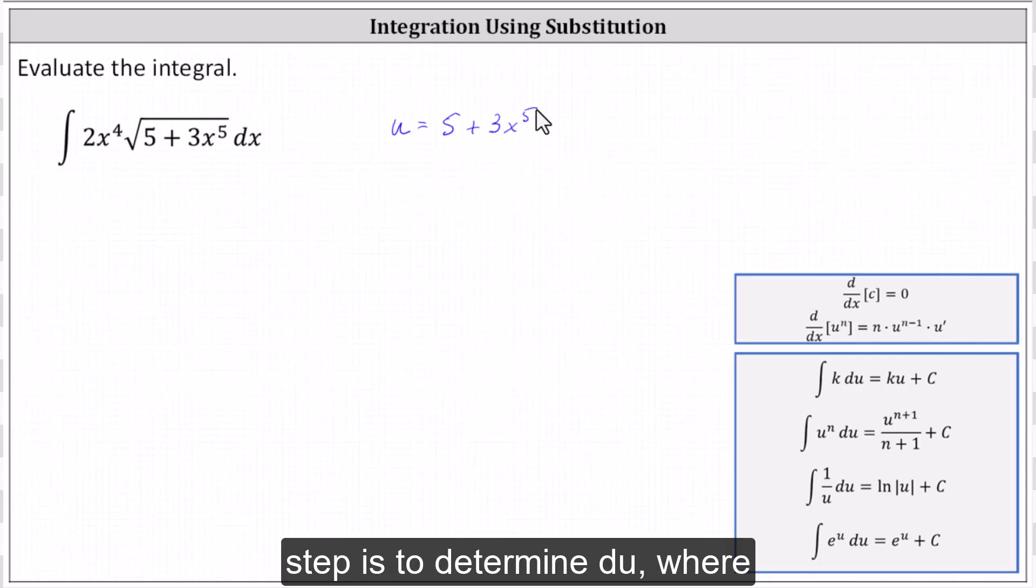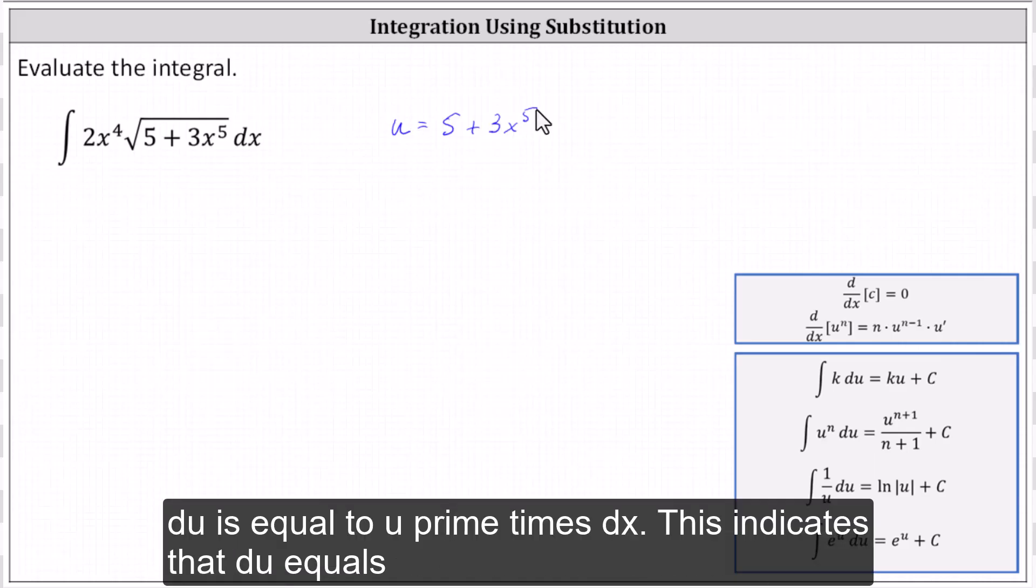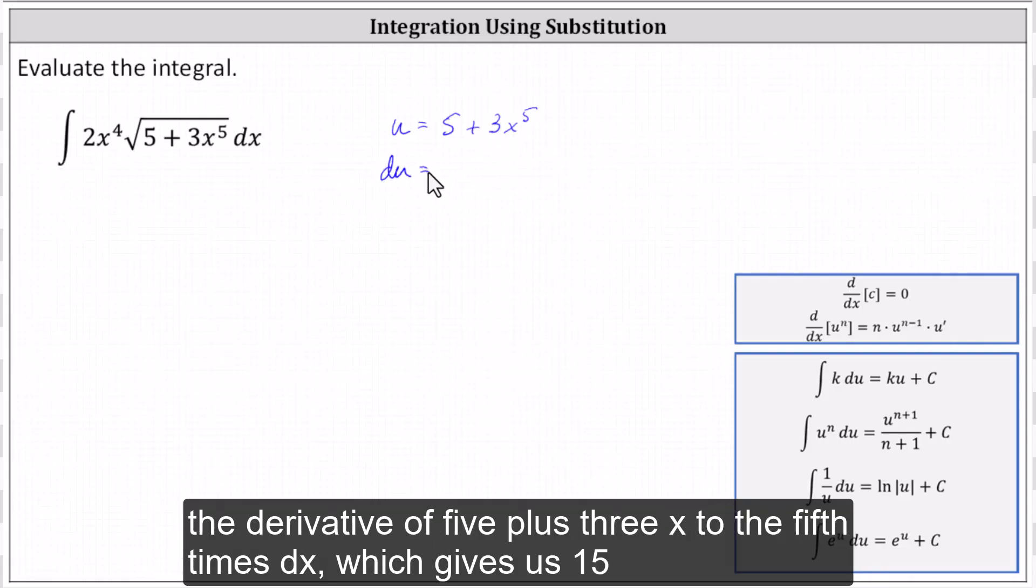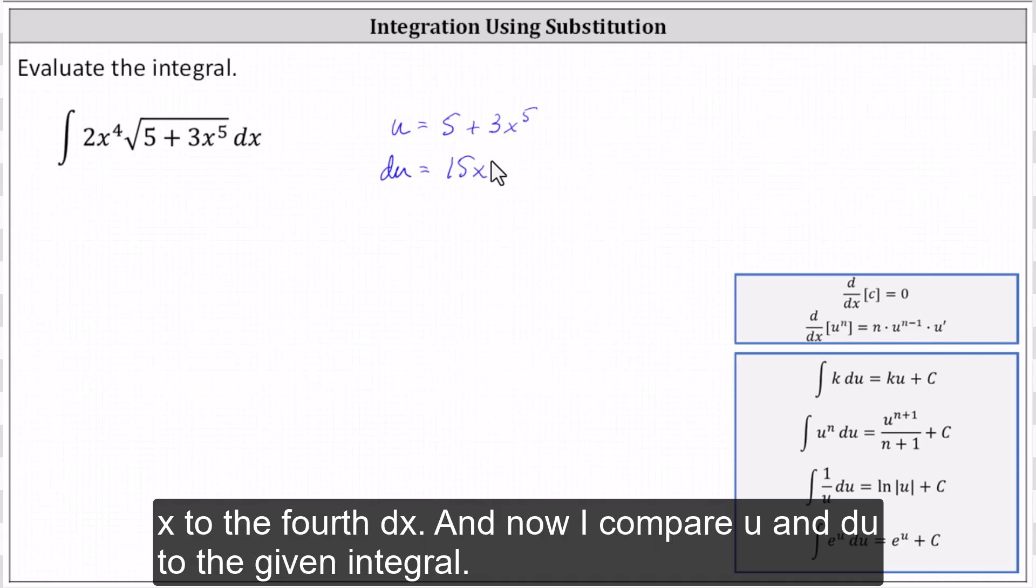The next step is to determine du, where du is equal to u prime times dx. This indicates that du equals the derivative of 5 + 3x^5 times dx, which gives us 15x^4 dx.